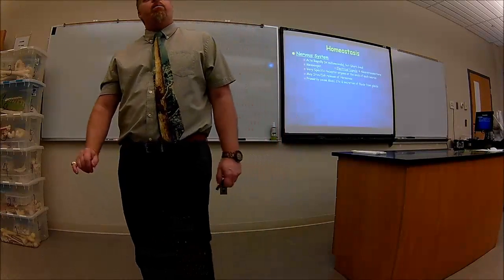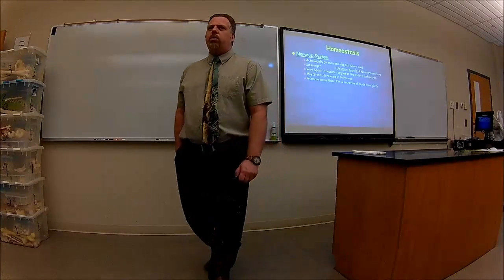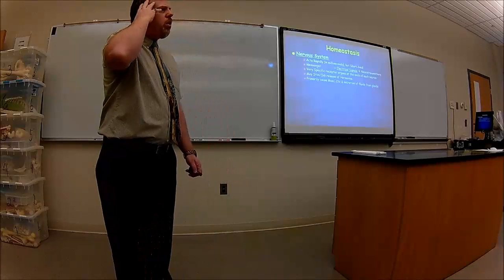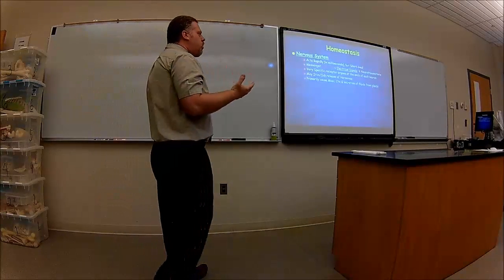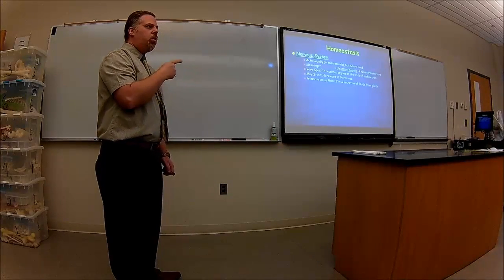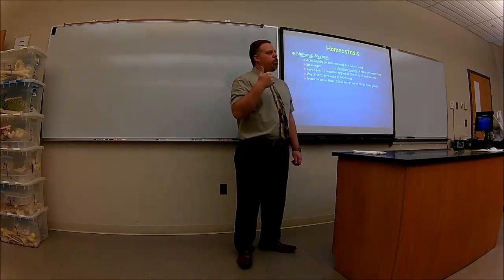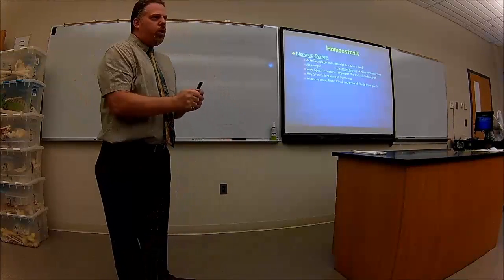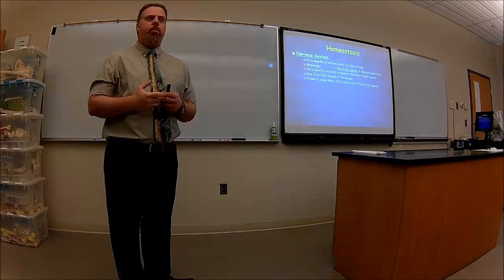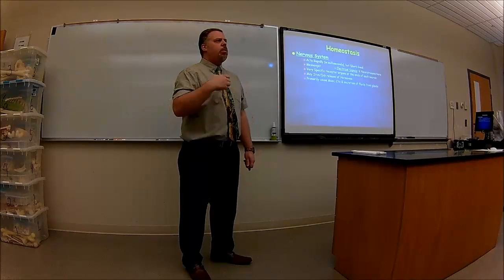The nervous system may stimulate or inhibit the release of hormones. The only two things it's going to control are muscle and glands. When I think of muscle, don't just think of skeletal muscles — you have cardiac muscle, smooth muscle around organs, blood vessels controlling blood pressure, smooth muscle around the uterus for contractions, smooth muscle around the intestines to push food along, and smooth muscle around the urinary bladder. Most people forget about smooth muscle.